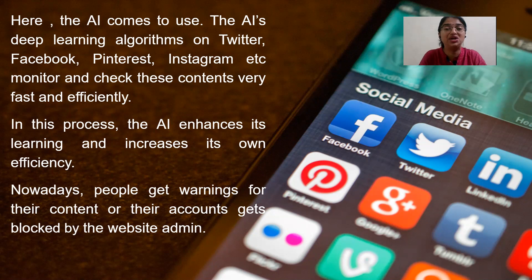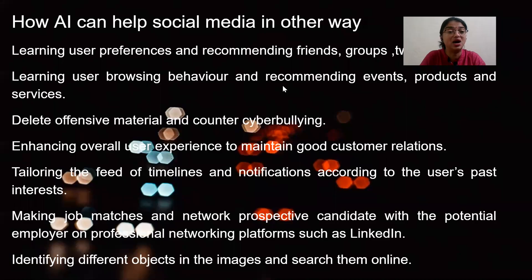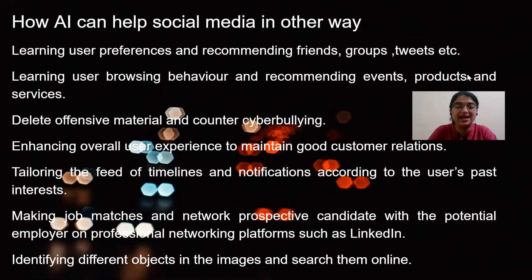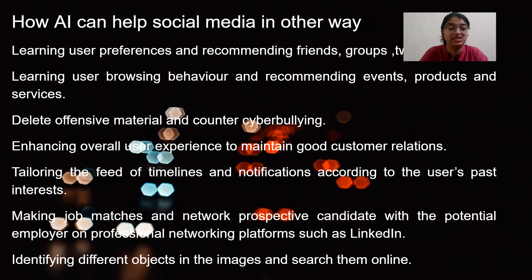We are trying to relate AI to the day-to-day things that we are doing. I picked social media first because the first thing we do in the morning is check our social networking sites — WhatsApp, Instagram, Facebook — for formal or informal purposes. The learning part is done by ML to know user preferences and recommend friends, groups, and tweets. It also learns user browsing behavior and recommends events, products, and services, which we have seen on Instagram and Facebook.